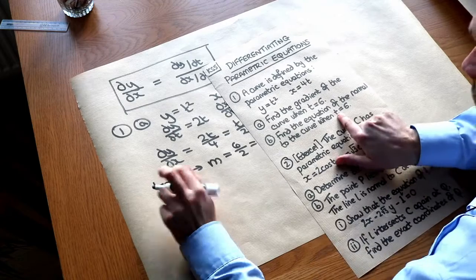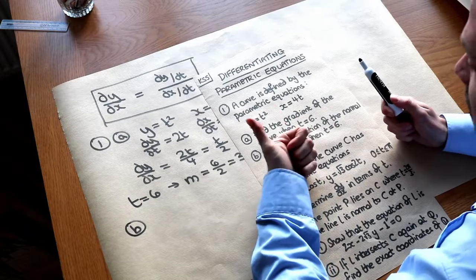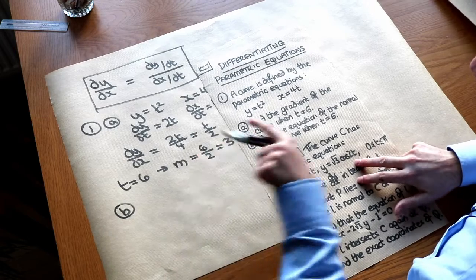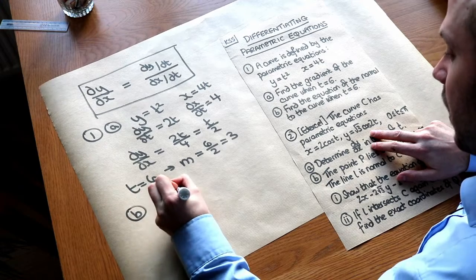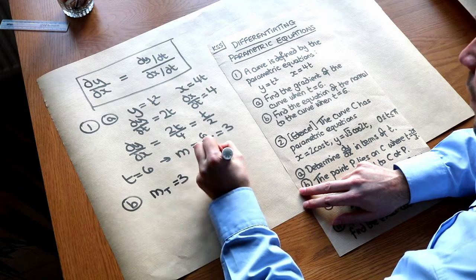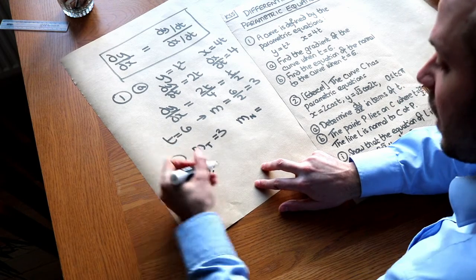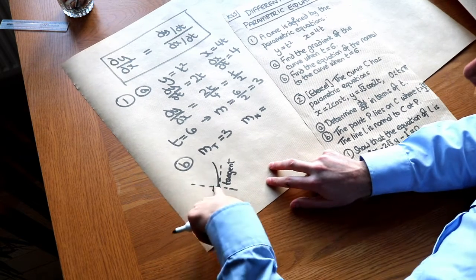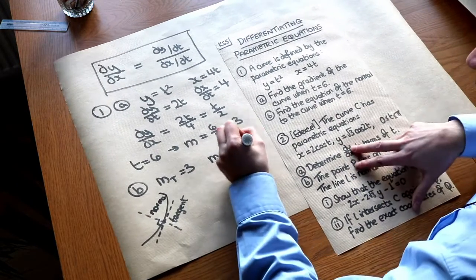Now we want to find the equation of the normal to the curve when t is 6. To find the equation of a normal or tangent, we need two things: a point on the line and the gradient at that point. We've already got the gradient when t is 6, which is 3 — although note that's the gradient of the tangent. The gradient of the normal would be the negative reciprocal of that, because the normal is perpendicular to the tangent. So the negative reciprocal of 3 gives us minus a third.